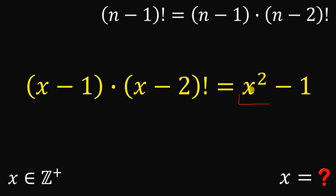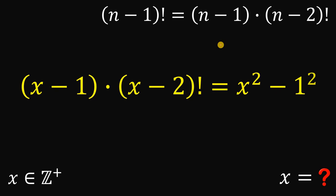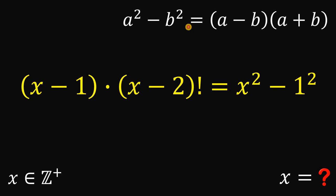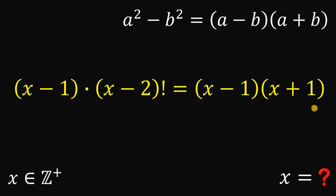On the right hand side we have x squared minus 1, which reminds us of the difference of squares identity: a squared minus b squared equals a minus b multiplied by a plus b. So x squared minus 1 can be factored as x minus 1 multiplied by x plus 1. We can see x minus 1 appears on both sides, so we divide both sides by x minus 1 to cancel it.